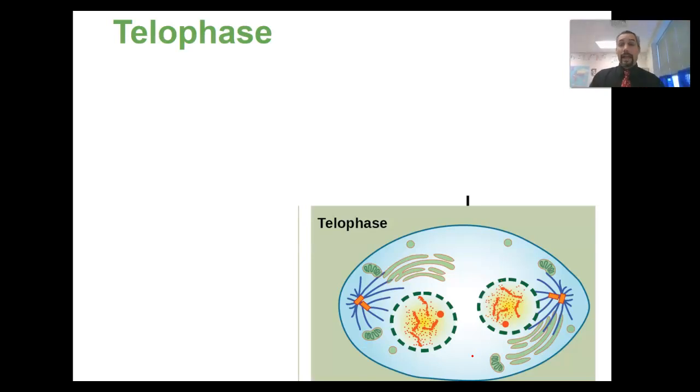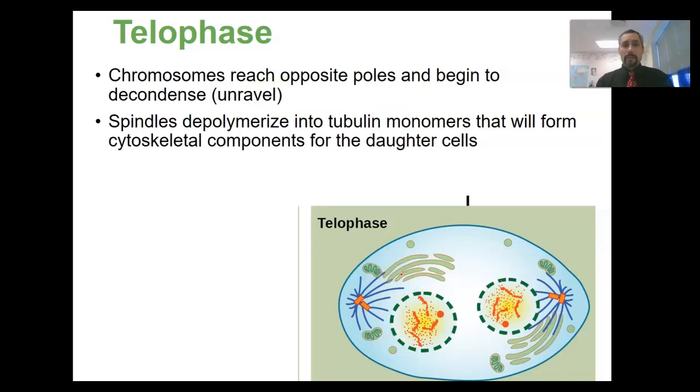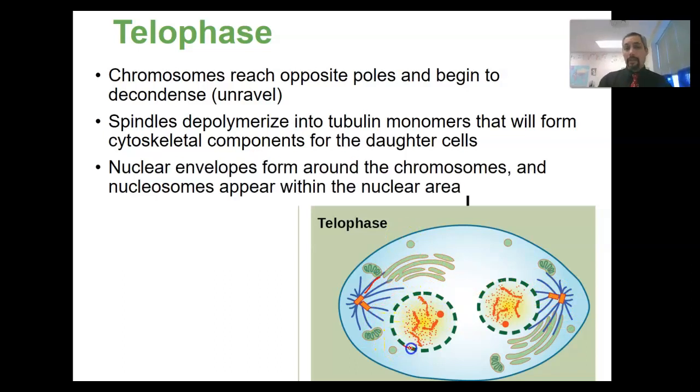So the telophase, our last bit of the actual mitosis phase here. The chromosomes reach these opposite poles. Now they begin to sort of unravel. They're no longer condensed into these chromatids. And so they unravel and begin to sort of reform into the chromosomes. We also have the spindles sort of being absorbed back in. And so what's going to happen is these spindles, so these blue lines here, these microtubule spindles, will basically be reabsorbed or repurposed to become the cytoskeleton of the new daughter cell. And then we also have this nuclear envelope reforming to generate a new nucleus for the daughter cell, one on each side. We also get the nucleosome reforming in each of those new nuclei.